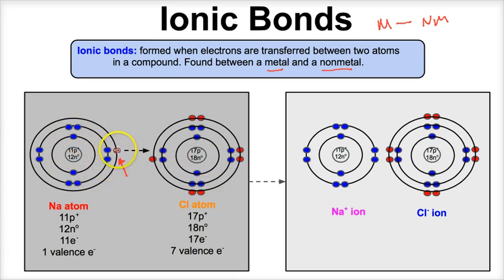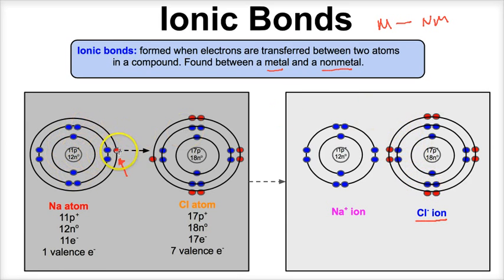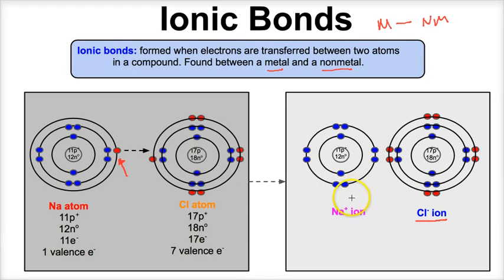So here's what happens when a sodium atom gets next to a chlorine atom: the sodium atom donates or transfers an electron to the chlorine. In doing so, the chlorine now has eight valence electrons — two, four, six, eight — as it becomes the chloride ion with a negative one charge. When the sodium atom loses this electron, its outer energy level disappears and exposes the next energy level, so the sodium ion now has eight valence electrons and has satisfied its octet rule.